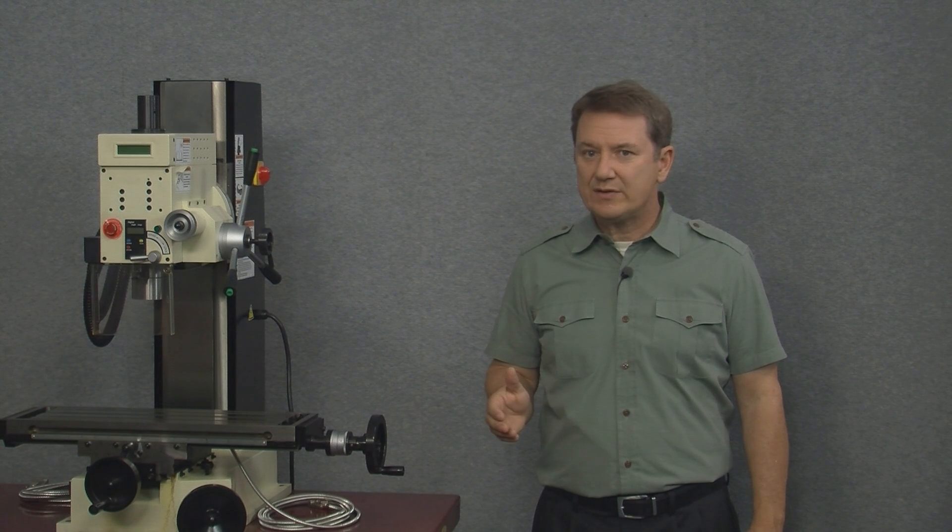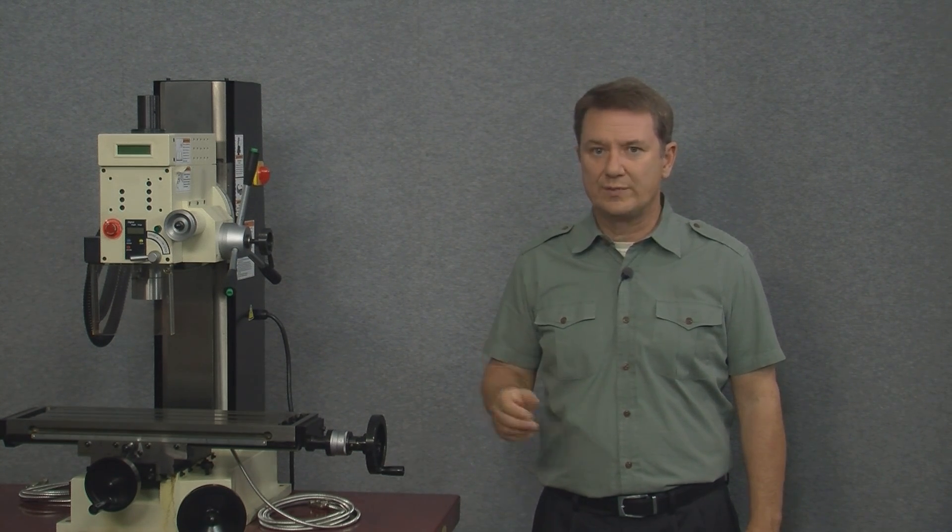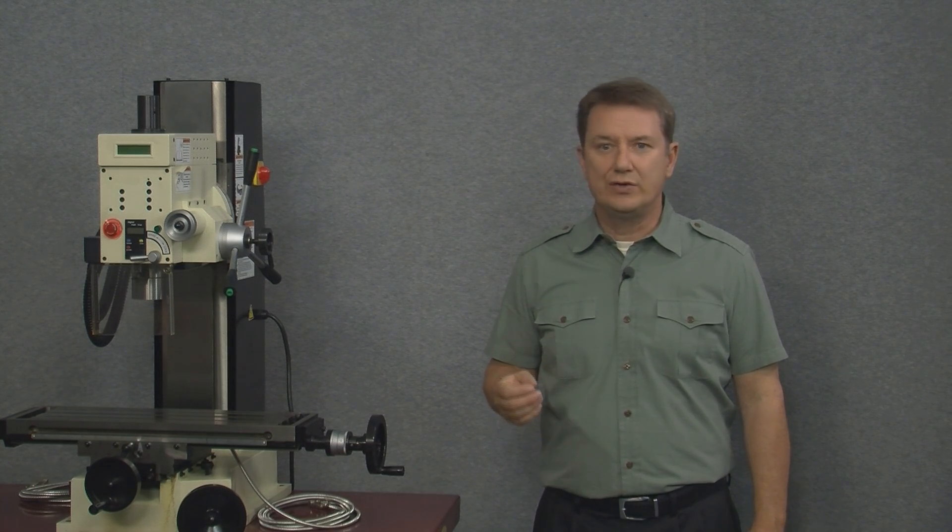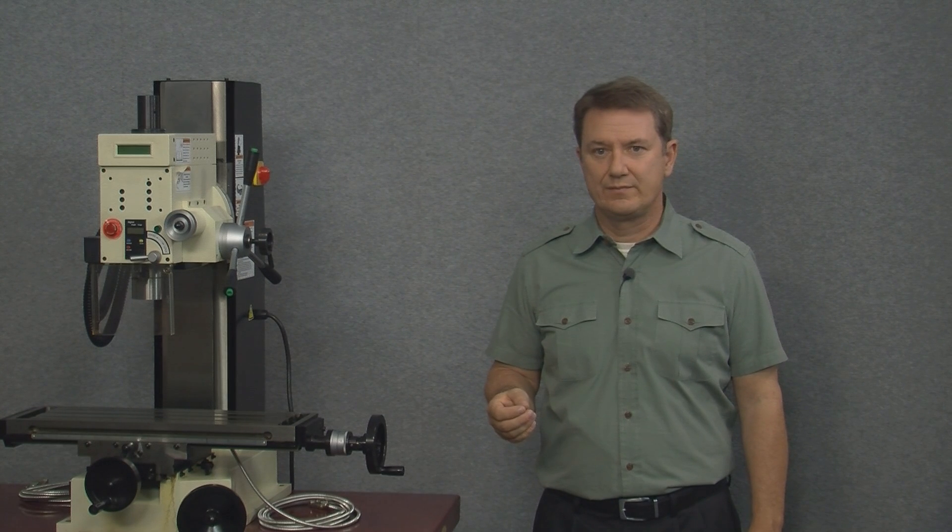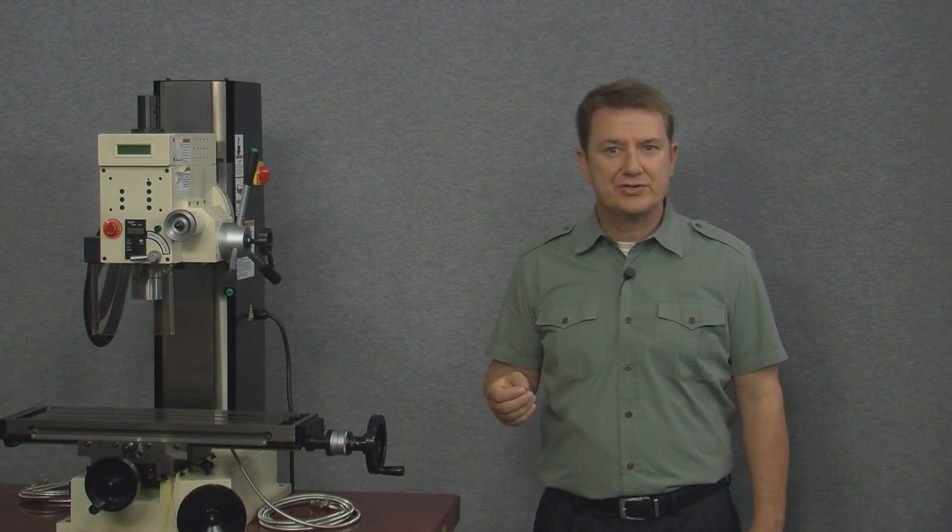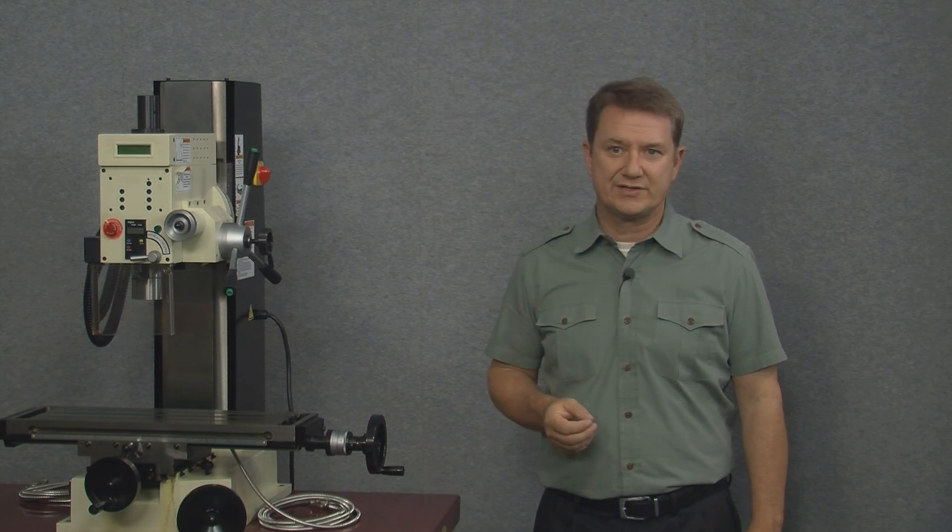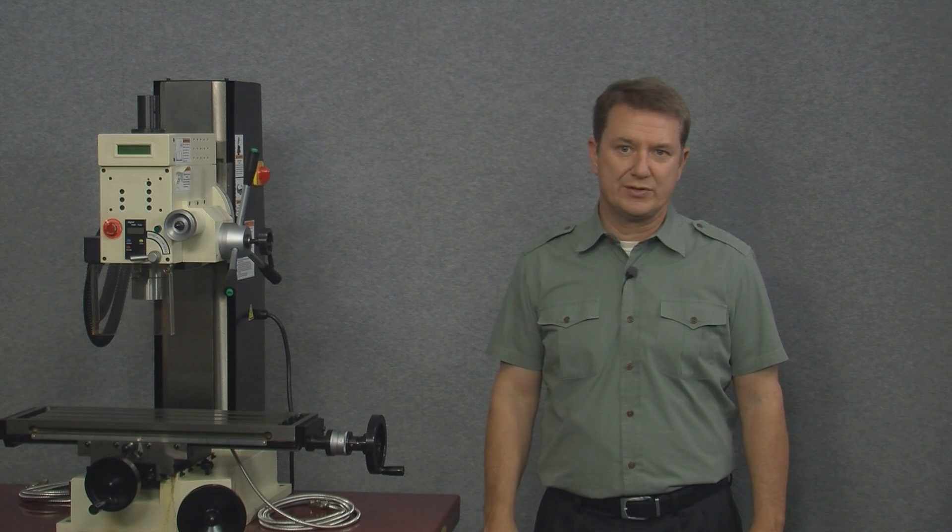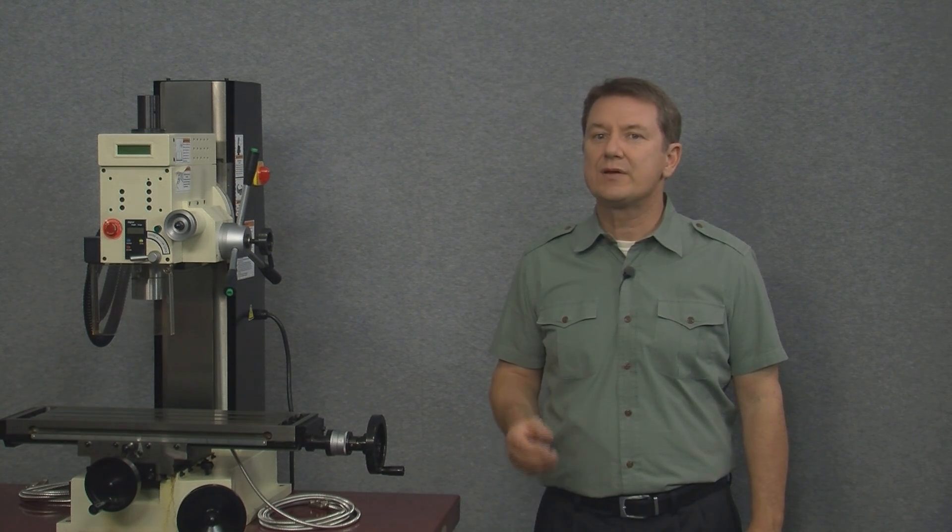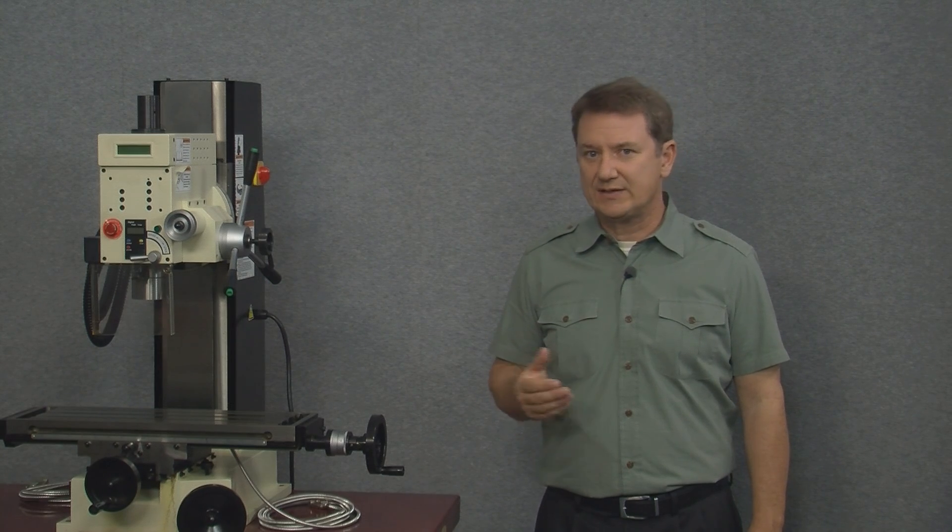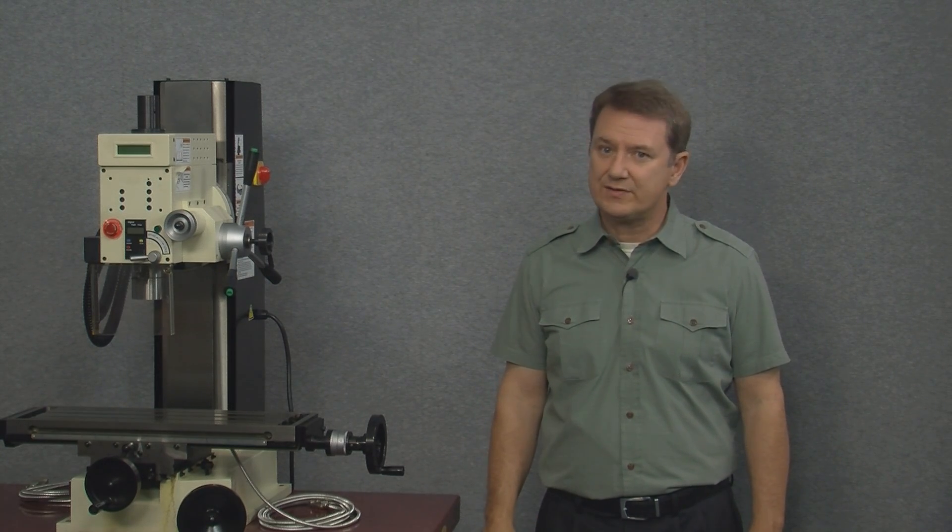First, you want to mount the display where it can't ever swing into the quill or your workpiece. Second, you want to mount the display where it's easy to read while you're machining. Third, you want to make sure whatever location you choose allows for easy access to all of your machine's controls, especially the emergency cutoff switch. And finally, you want to mount the display where it's easy to reach, yet at the same time you don't have to reach over any moving parts to get to it.